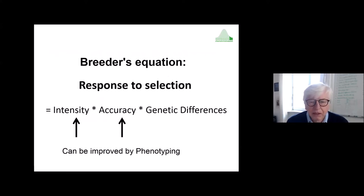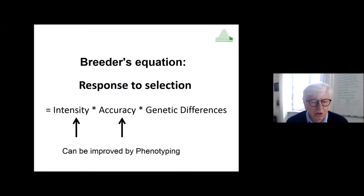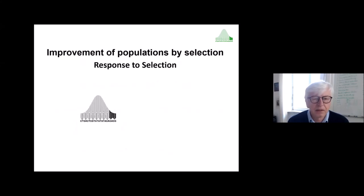Usually we have the breeder's equation. It tells us something about the response to selection, and selection is the main method for improving plant populations. To increase the response to selection, we can increase the intensity, the accuracy, and the genetic differences. The first two parameters — intensity and accuracy — can be really improved by phenotyping.